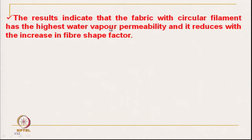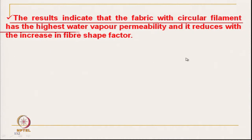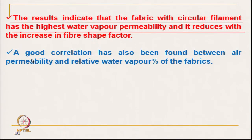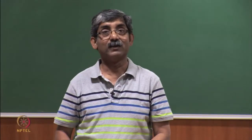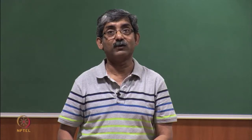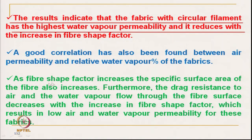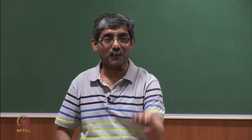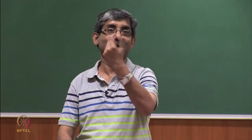The results indicate that the fabric with circular filament has the highest water vapour permeability, and it reduces with the increase in shape factor. This is basically due to the vapour pressure drag caused by the higher specific surface area of the fibre with higher shape factor. A good correlation has also been found between air permeability and relative water vapour permeability. So for fabric made of polyester fibre, if we want to know the trend of moisture vapour permeability, we can simply test air permeability to get the idea.